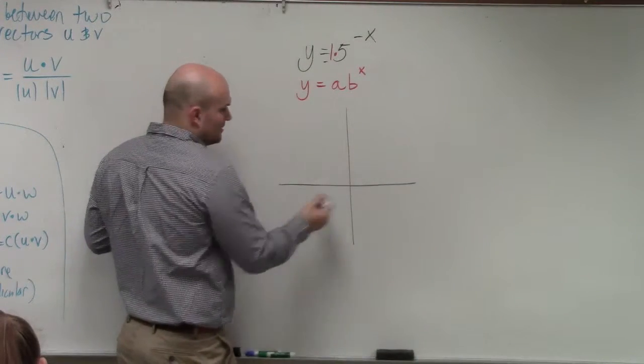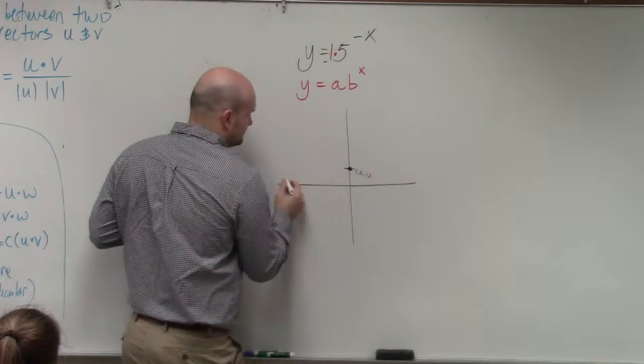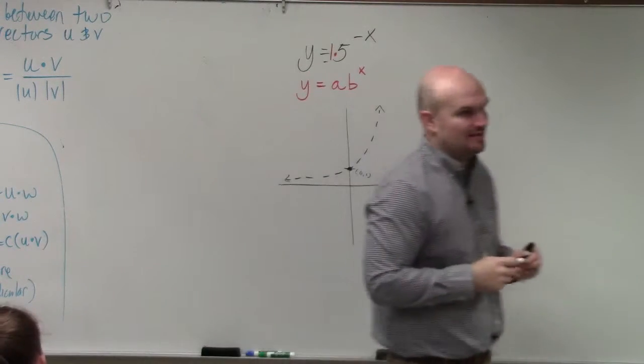So there's my point, 0 comma 1. Now, I'm doing this dashed line, because I'm not done with the graph yet.